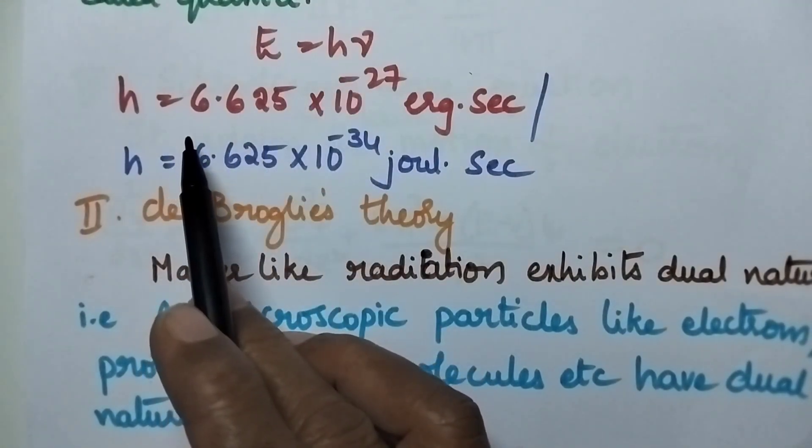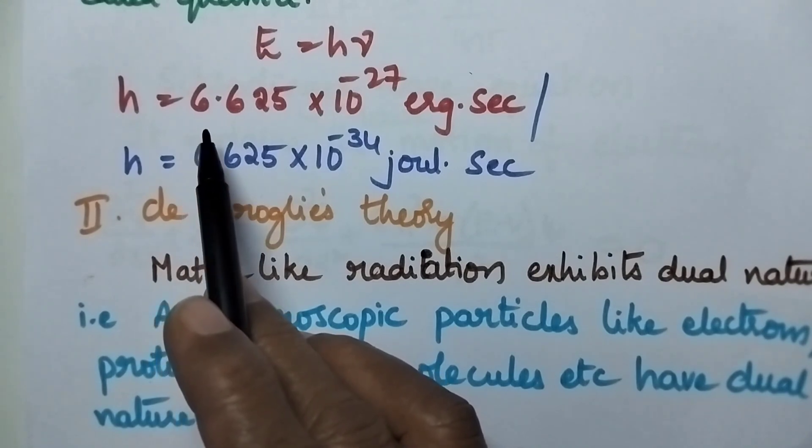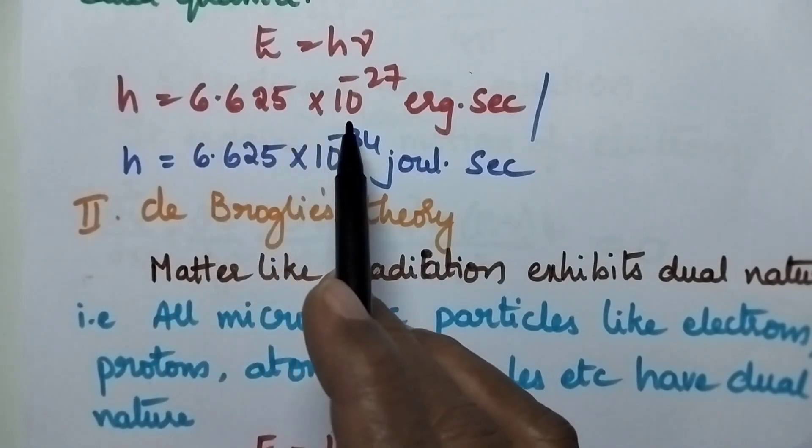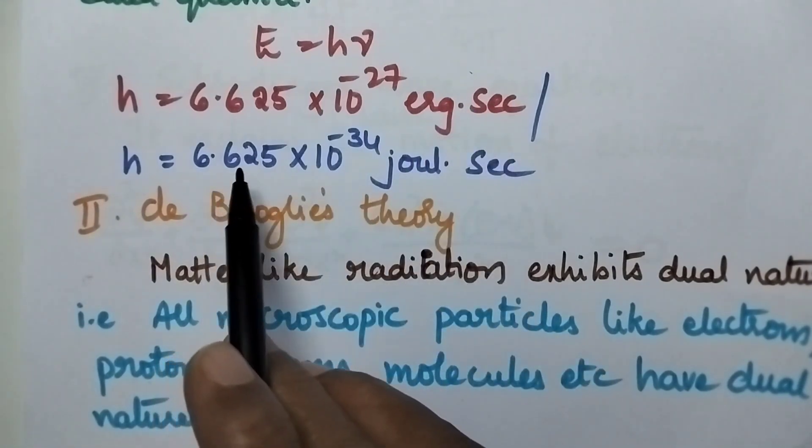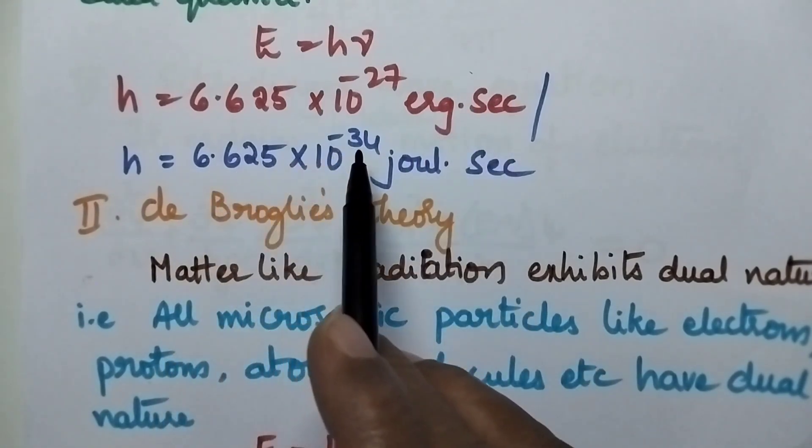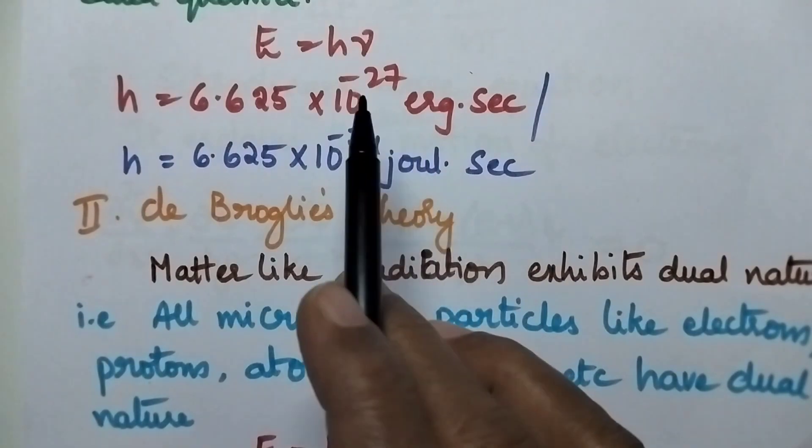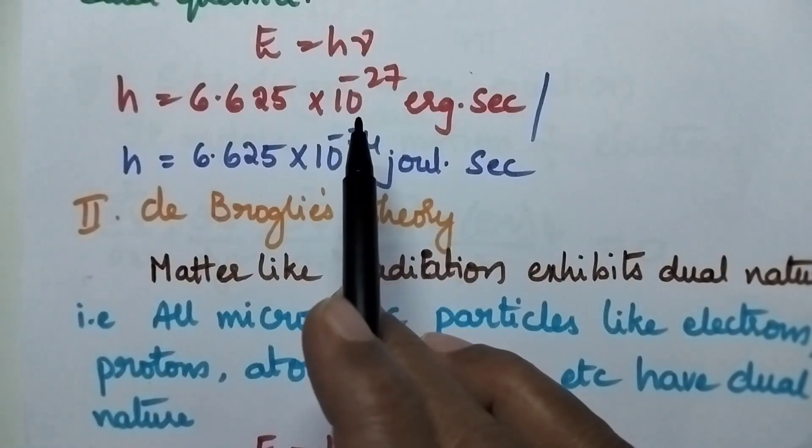Where H is Planck's constant, and its value is 6.625 times 10 to the power minus 27 erg second, or 6.625 times 10 to the power minus 34 joule second, where nu is the frequency of the radiation.